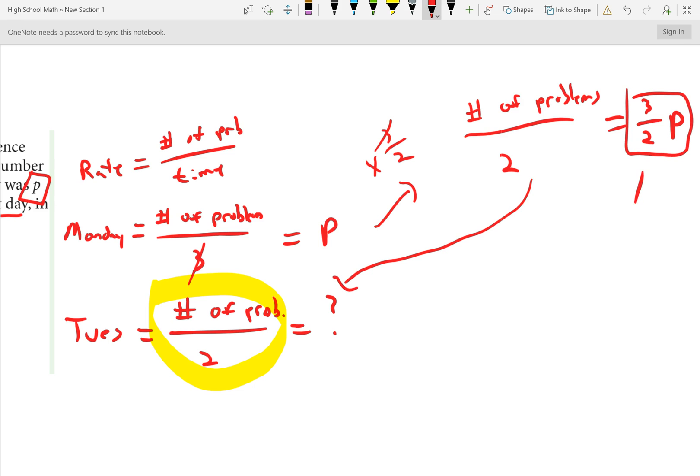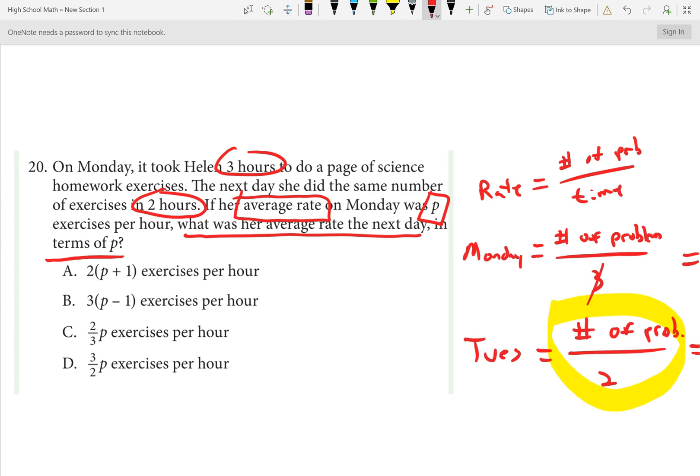Why does this make sense? Well, note that three over two is 1.5. If Helen did all the exercises in three hours, and then the next day did all the exercises in two hours, she went 50% faster. And you can see that headed in this direction. Going from two to three, 50% of two is 1. 2 plus 1 would be 3. So, the correct answer on number 20 is D.